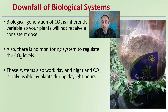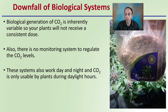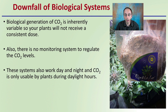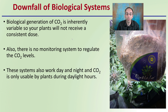The downfall of using these biological systems — no matter what brand or source — is that biological generation is inherently variable, so your plants will not receive a consistent dose of carbon dioxide. There is no monitoring system to regulate CO₂ levels, meaning at some points it could be very high, at others very low. These systems also work day and night, but carbon dioxide is only usable by plants during daylight hours, so you have periods of CO₂ production that can't be utilized, reducing the overall efficiency of the system.